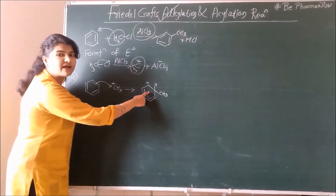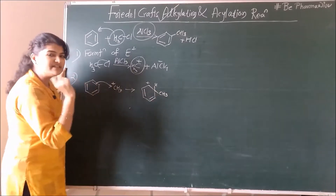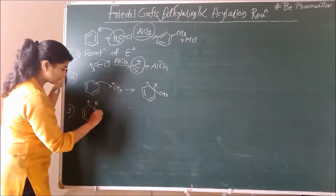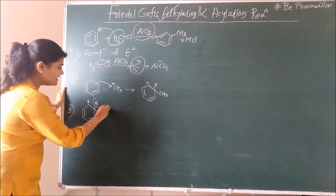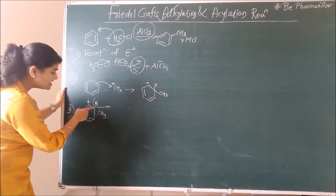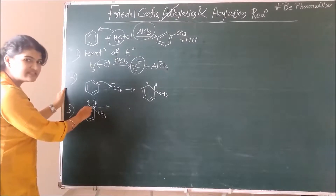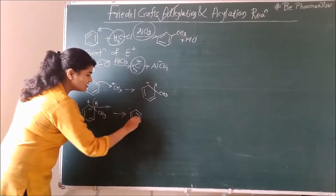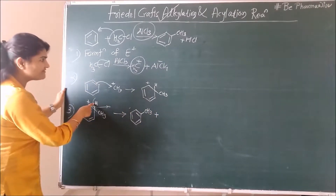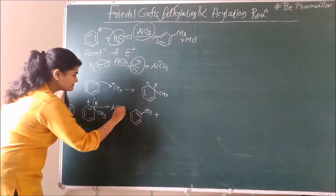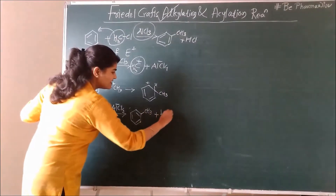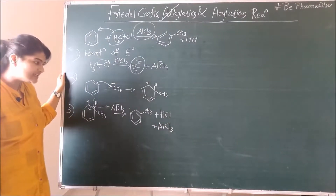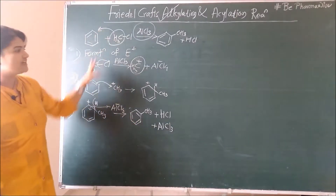In the third step, this carbonium ion loses a proton to form alkyl benzene. The proton leaves behind two electrons, which are taken back into the benzene ring, eliminating the negative charge and restoring the double bond. You get alkyl benzene, and the H+ which left reacts with AlCl4- to give HCl plus AlCl3 — meaning aluminium chloride is regenerated.